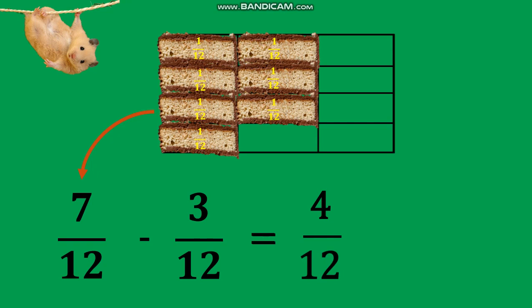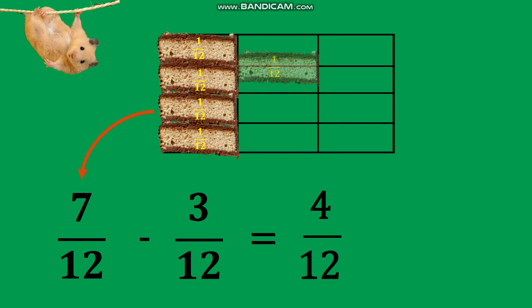By visualizing, we remove 3 one-twelfth portions from 7 twelfths, and 4 twelfths are left. Changing it to lowest terms by removing some slices dividing the whole cake shows 1 third.